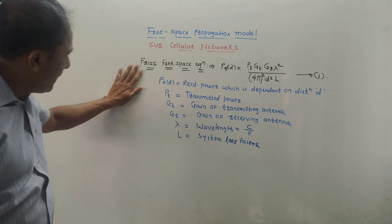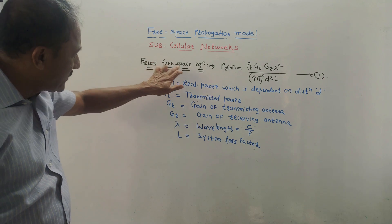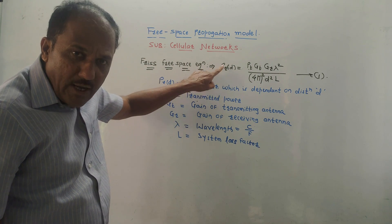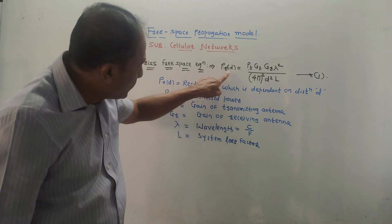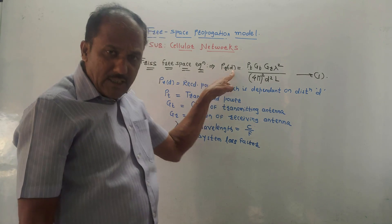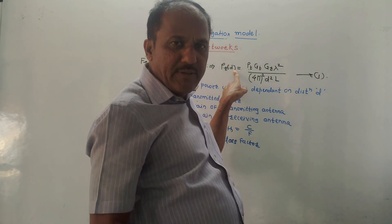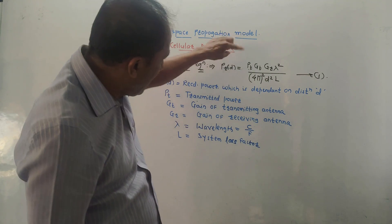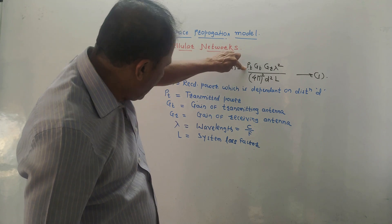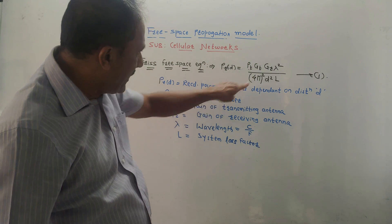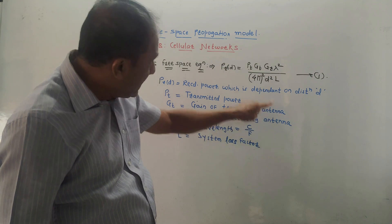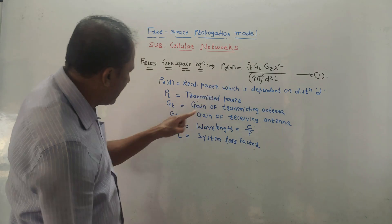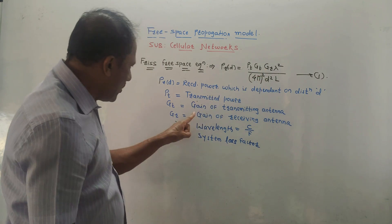We will start with the standard formula, that is the free space equation. It is given by PR(d). P stands for power, R stands for received power, so this is the received power. Small d is the distance between transmitting and receiving antenna. The formula is: PT·GT·GR. PT is transmitted power, GT is gain of transmitting antenna — suffix T indicates gain of transmitting antenna. Similarly, GR is gain of the receiving antenna.